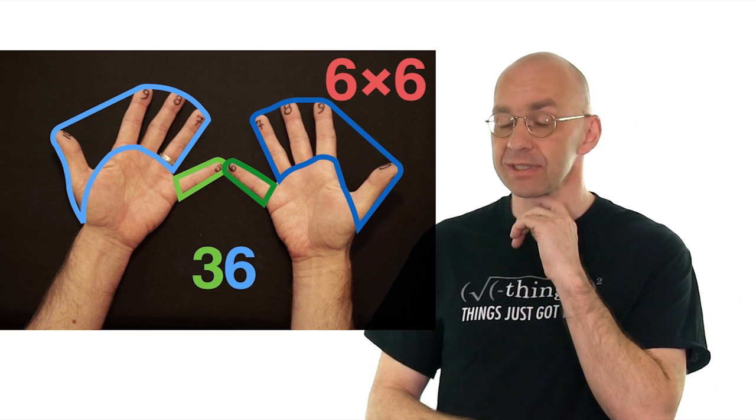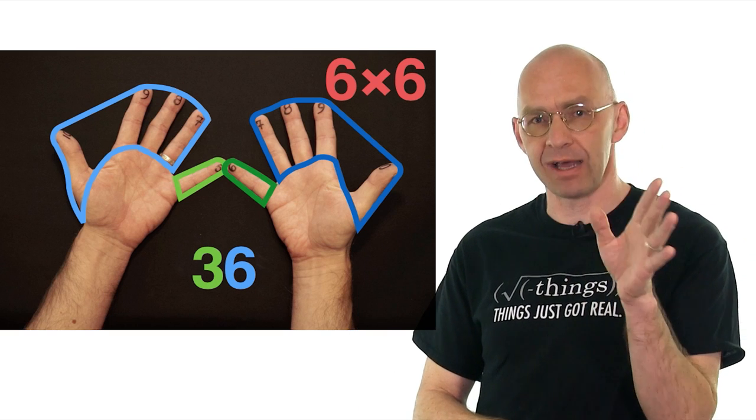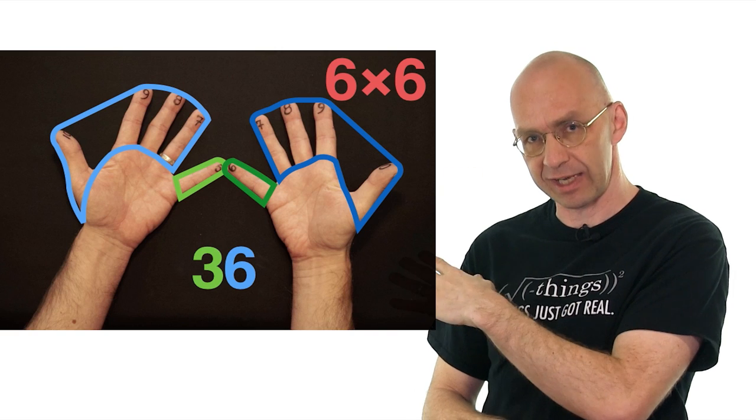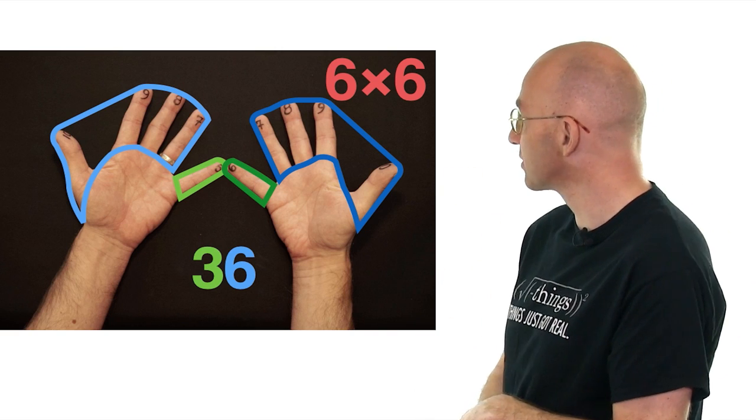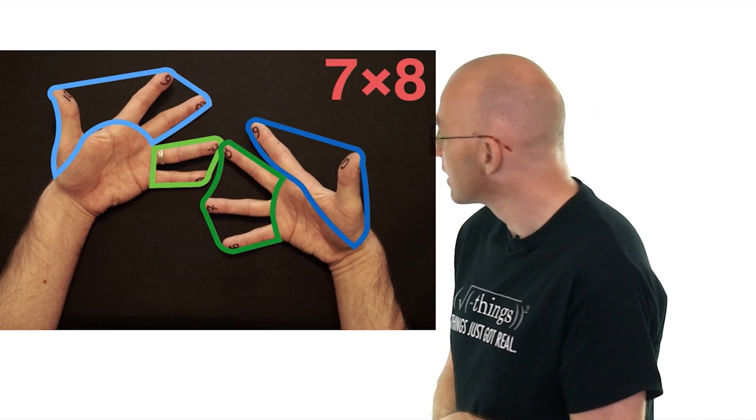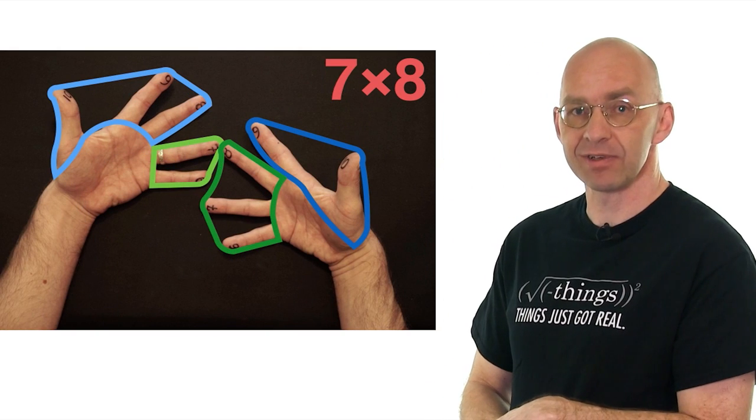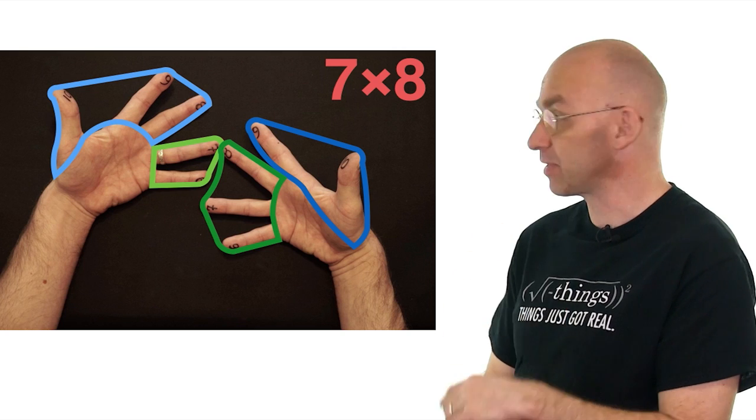Perfect. Now the next thing I'm going to do is something that hasn't been done before in the history of this trick, I think. I'm going to go for a countdown. I'm going to do 7 times 7 and 7 times 6. Let's just see what happens.